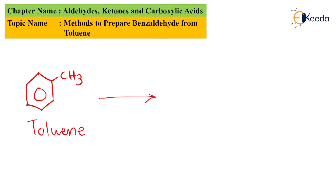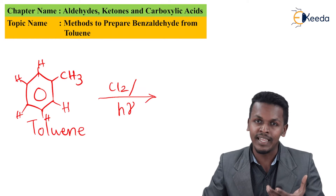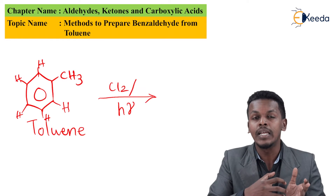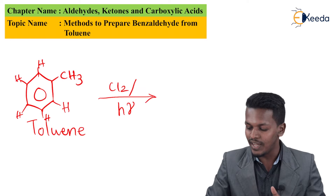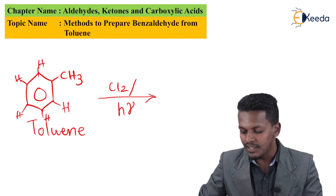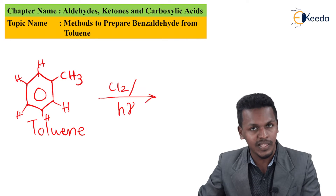The chlorination is carried out in presence of Cl2 and UV light. The hydrogen atoms attached to the benzene ring will be unaffected, because it has been found that hydrogen atoms attached to the aromatic ring are quite stable and cannot be removed easily — that is the reason they cannot undergo substitution reaction easily when Cl2 is used in presence of sunlight.